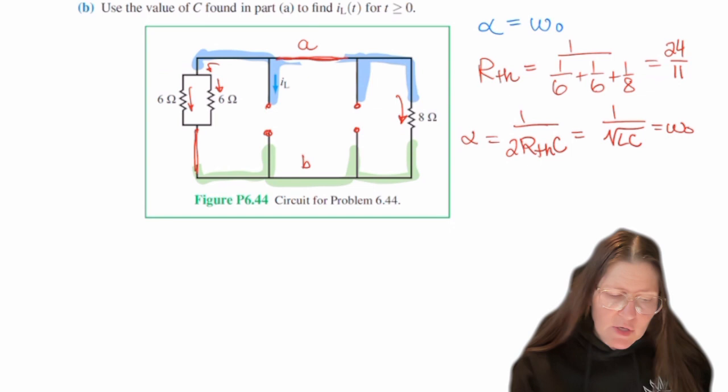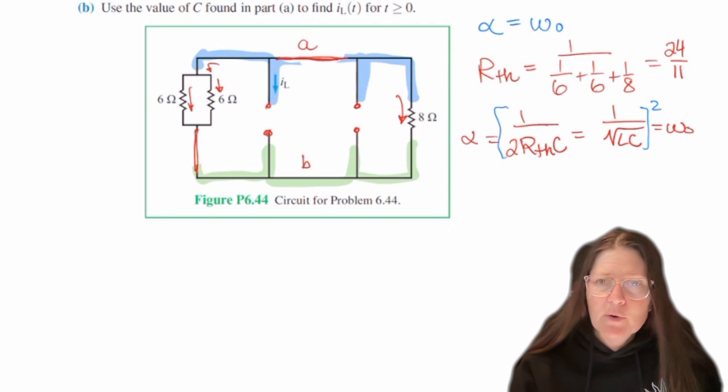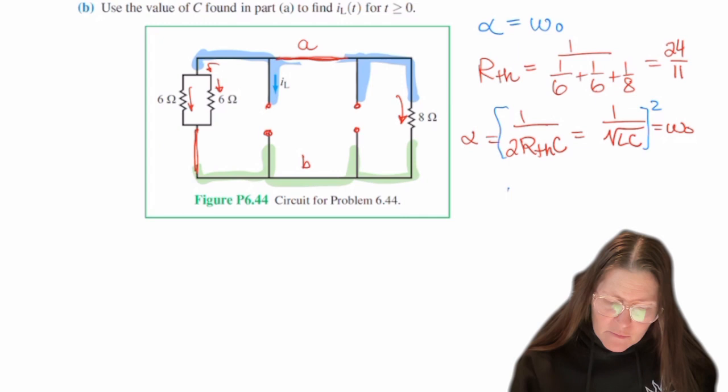In order to get rid of that square root we are going to want to square both sides. So when we square both sides we are going to have 1 over 4RTH squared and then a C squared is equal to 1 over LC.